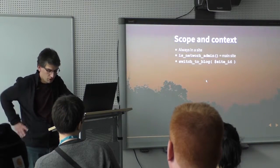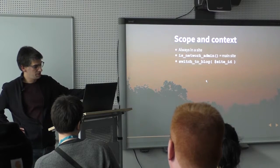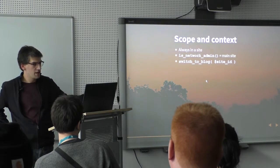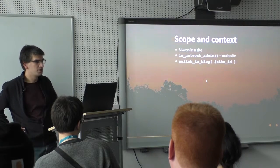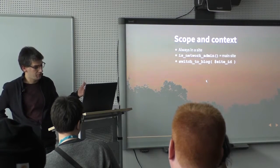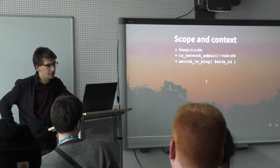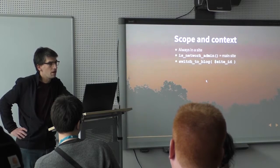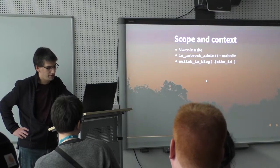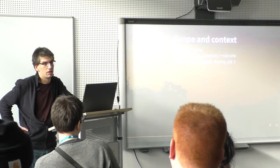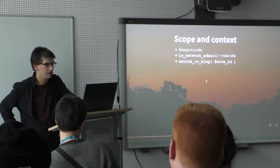Scope and context: all code always runs in the context of one site in a network — maybe in the context of the main site or a sub-site. Each site has a site ID. For example, when you run wp_insert_post, it will automatically be inserted in that site's database tables. Then there is the context of the network administration screen, where the API for adding custom content — like the settings API we have for single sites — often breaks.